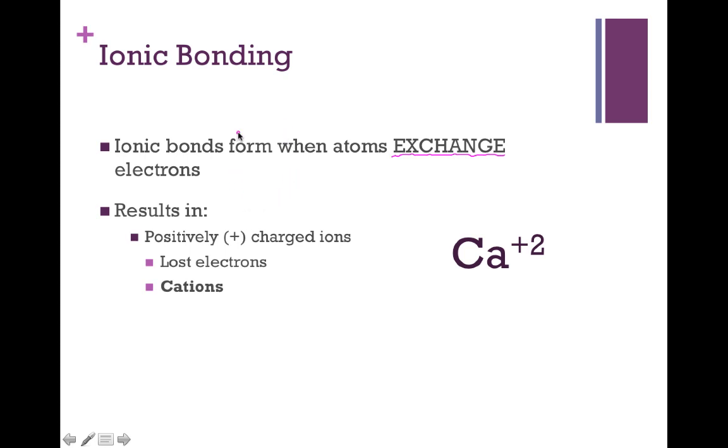This exchange results in the creation of what are known as ions. And ions, if we have to put a definition to it, are basically atoms with a charge. And that charge, in this case for calcium, is going to be positive 2. If atoms are exchanging electrons, again, exchange infers a gain or a loss.